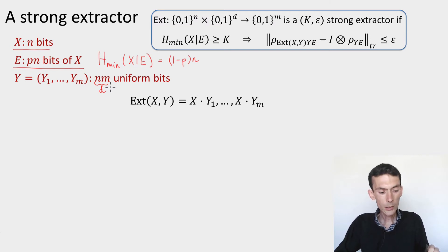We'll interpret this seed of n, m uniform bits as m bit strings. Each of them is made of n bits. So y1 has n bits, ym has n bits, and the extractor on input the source and the seed will output m bits obtained by taking the inner product of the source x with the first part of the seed y1, then the inner product of the source with the second part of the seed y2, up to the mth bit.